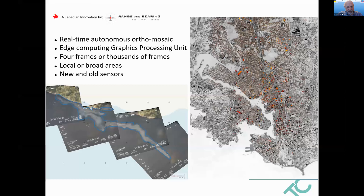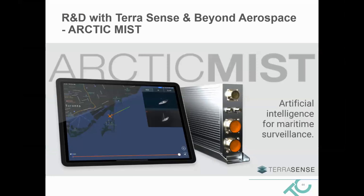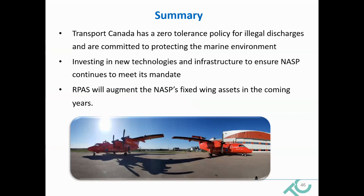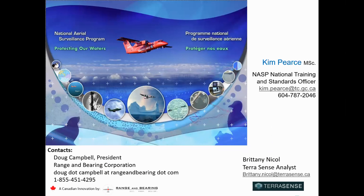The last project is Arctic Mist — a 30-month project that just started in July. We're going to be looking at creating edge computing on board to fuse the data and applying artificial intelligence for real-time data analysis. They're going to be fusing all the data and creating the databases for artificial intelligence. We're just at the front stage of this one. To finish up: Transport Canada has zero tolerance for pollution and illegal discharge, and there's lots of investment going into new technologies to support the enforcement mandates. Thank you very much, we'll take any questions.